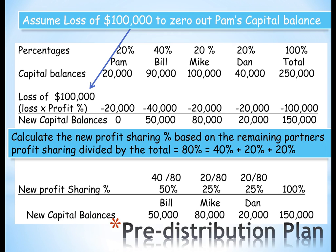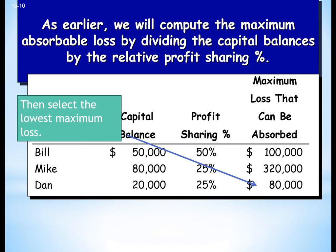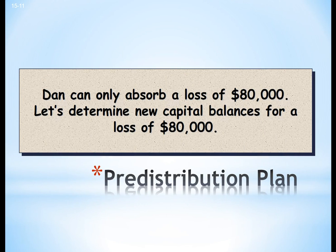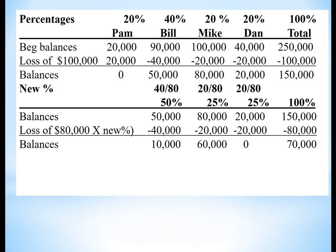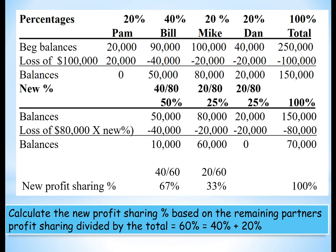We do a new schedule and go through the process again. We take the remaining capital balances and divide by the profit sharing. In this example, $80,000 is the lowest maximum loss, so Dan can only absorb a loss of $80,000. Let's determine new capital balances for a loss of $80,000. We're going to calculate the new profit sharing percentage based on the remaining partners. The total is only 60% with 40-20, giving us 67% for Bill and 33% for Mike.